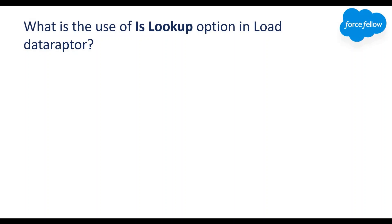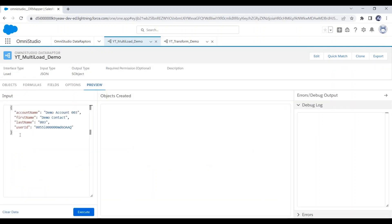Next question: what is the 'Is Lookup' option in Load Data Raptor? Let's discuss a scenario. Say you want to save a user's email address in a contact's email address field, but in the input data you have only the User ID, not the email address. Normally you would have to write a query to get the email address by passing the User ID. But in Data Raptor you can achieve this requirement by only point-and-click.